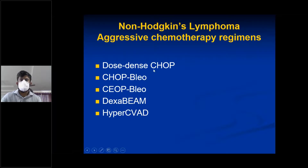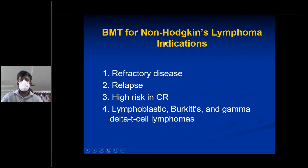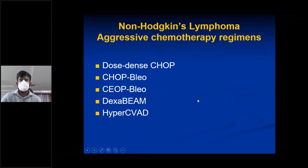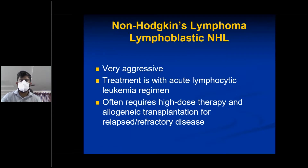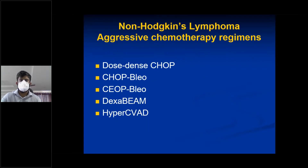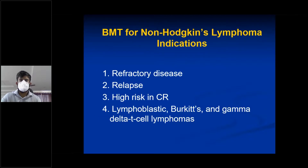Aggressive therapy regimens include dose-dense CHOP. The three most aggressive subtypes — lymphoblastic, Burkitt's, and gamma-delta T-cell lymphomas — require allogeneic bone marrow transplantation due to their very aggressive nature and very poor outcomes.